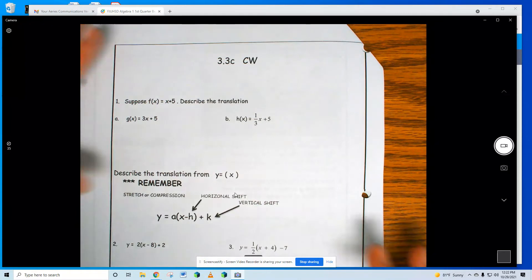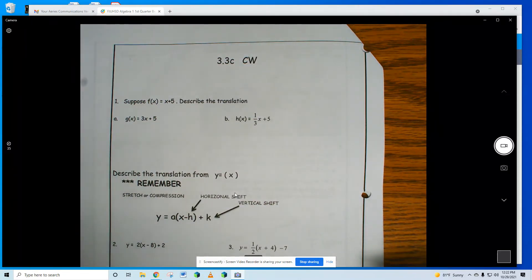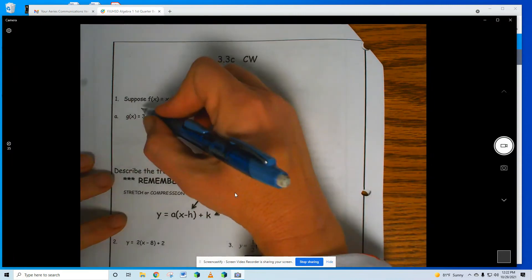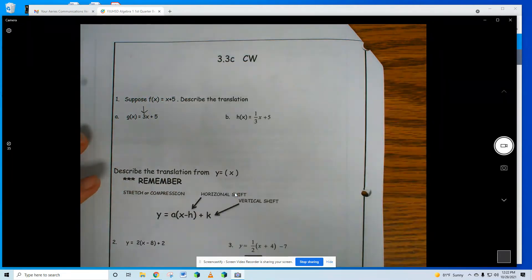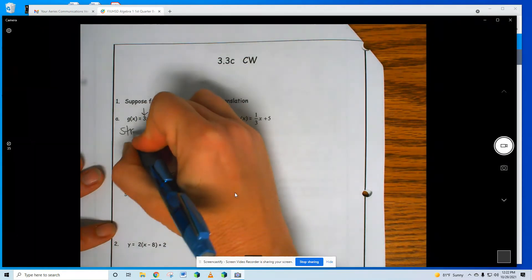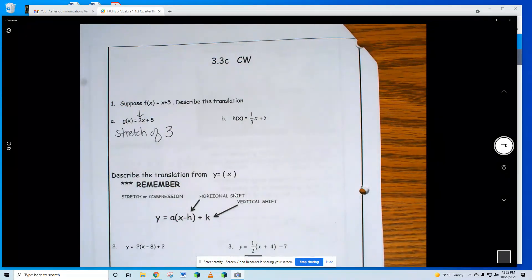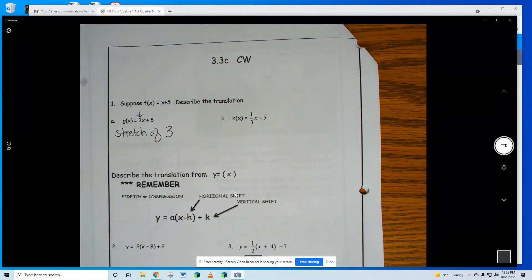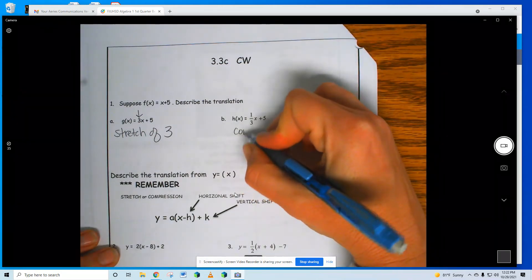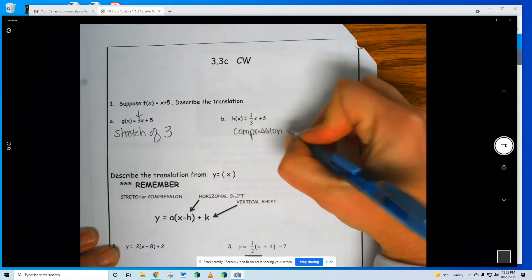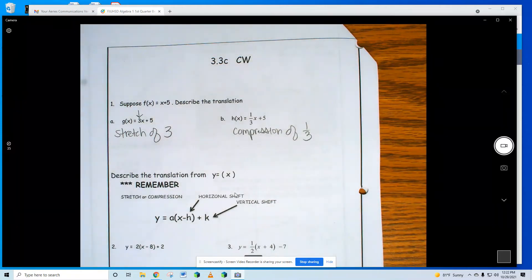Suppose f(x) equals x plus 5. What happens if I put a 3 in front? What's a 3 do? Look on the board. Well, what's that called? A stretch of 3. All right, what's happening if I put a 1/3 in front? Compression of 1/3.